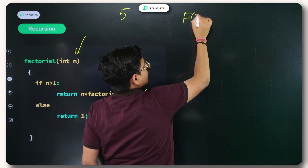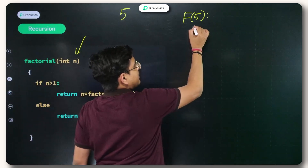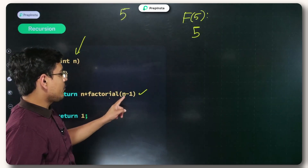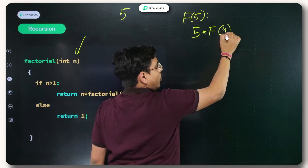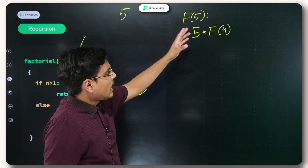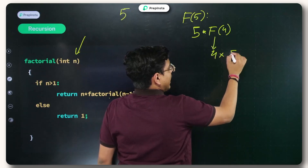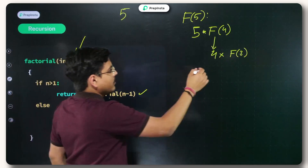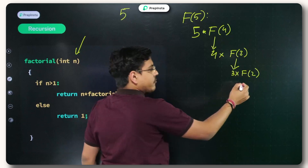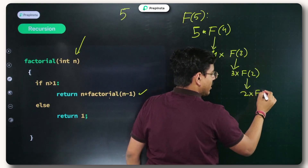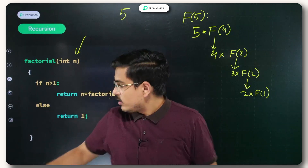Consider that we want to find f of five. I will execute this particular statement: five into factorial of n minus one, which is basically five into f of four. To answer f of four, we calculate four into f of three. Similarly, f of three is nothing but three into f of two. f of two is nothing but two into f of one. And we know that f of one is basically one, because one is not greater than one, so it will automatically return one.